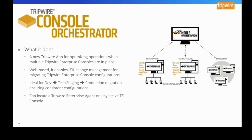For these organizations, it can be a real challenge to keep different environments properly synchronized so that a given report developed in one console is available elsewhere. Console Orchestrator is a way to synchronize the configuration of multiple TE consoles. The way it works is you point it at a source console and extract from it a variety of configuration details.